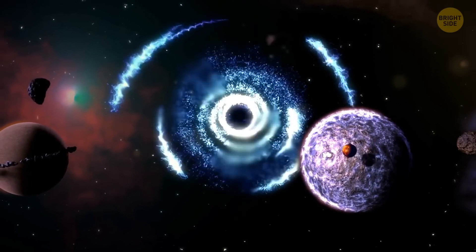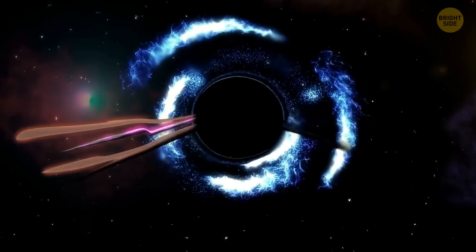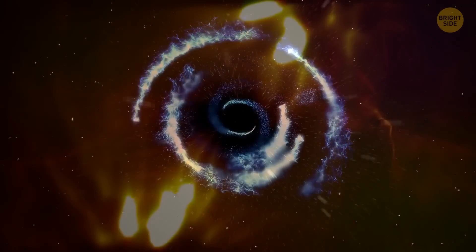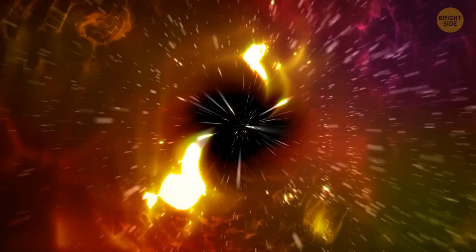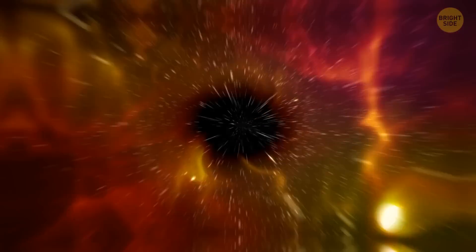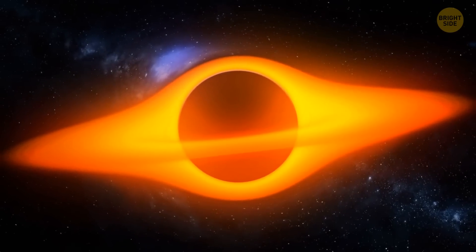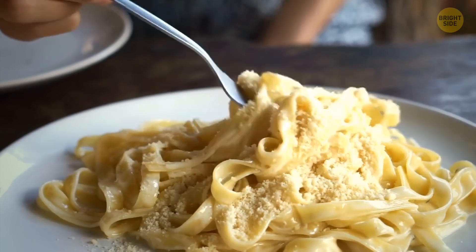When something goes into a black hole, it changes shape and gets stretched out just like spaghetti. This happens because gravitational force is trying to stretch an object in one direction, but at the same time, squeeze it into another. Like a pasta paradox.